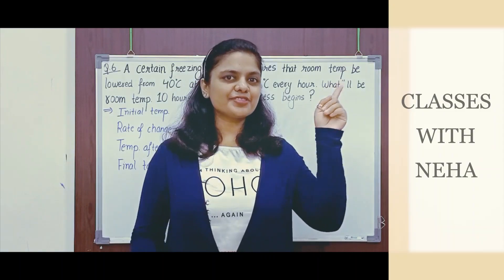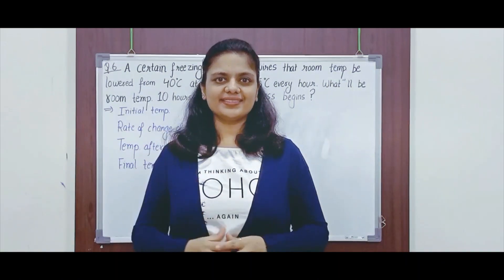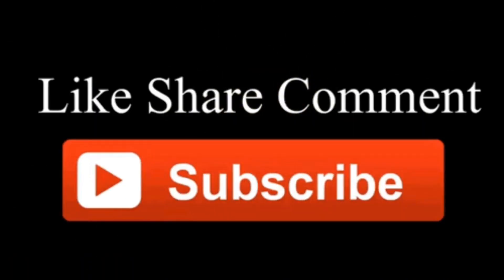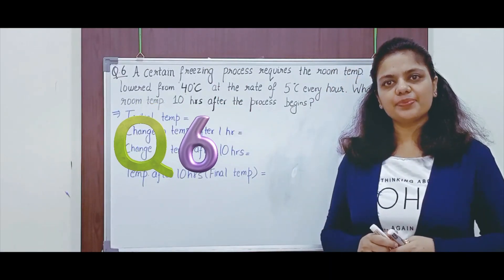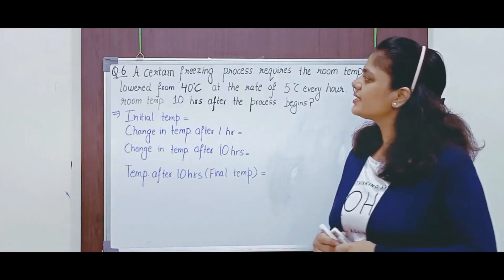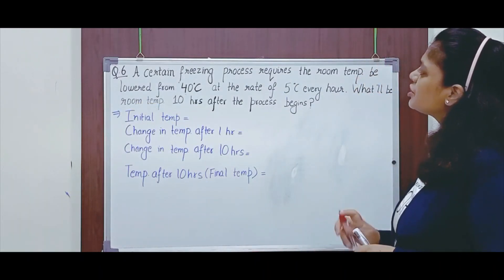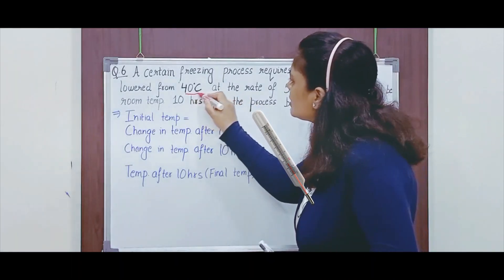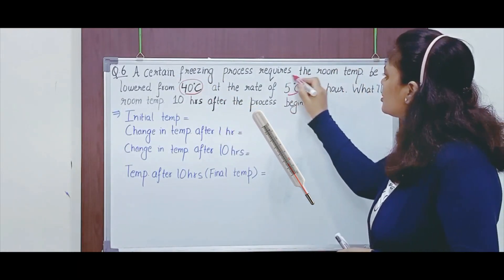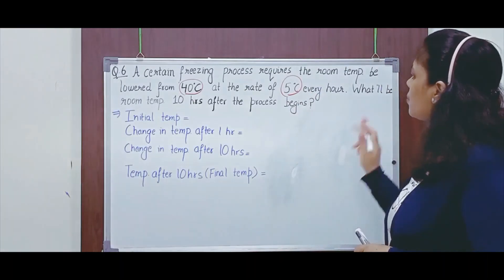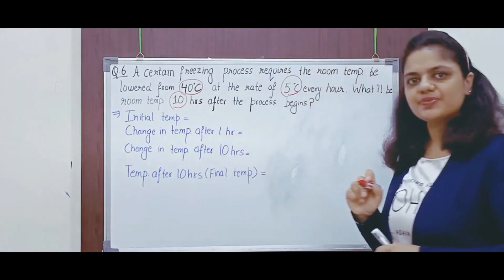Mance is at your service if you subscribe to my channel and tap the bell icon. Let's fix question number 6 from exercise 1.3 integers. It says: a certain freezing process requires room temperature to lower from 40 degrees Celsius at the rate of 5 degrees Celsius every hour. What will be the room temperature 10 hours after the process begins?